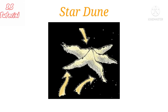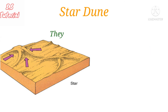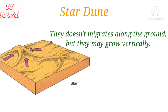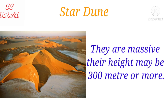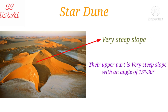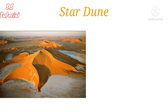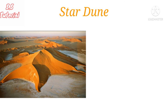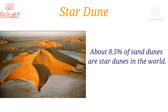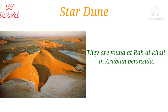Star dunes are large pyramidal- or star-shaped dunes characterized by three or more slip faces. They do not migrate along the ground but instead grow vertically. They are very large, potentially reaching heights of more than 300 meters. The upper parts of many star dunes have very steep slopes at angles of 15 to 30 degrees. Star dunes contain a greater volume of sand than any other type of sand dune. Approximately 8.5% of all dunes are star types. Star dunes are found in the Rub' al Khali in the Arabian Peninsula.